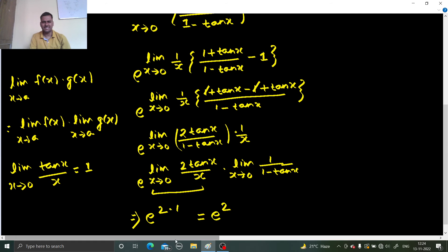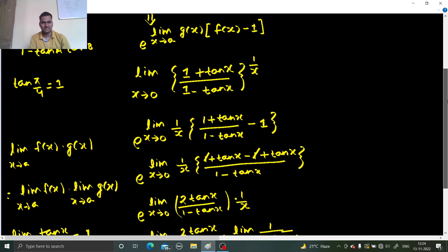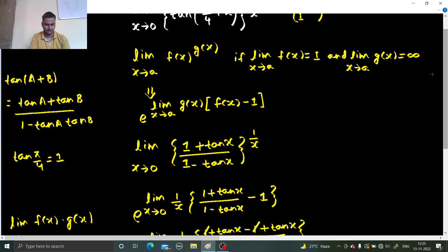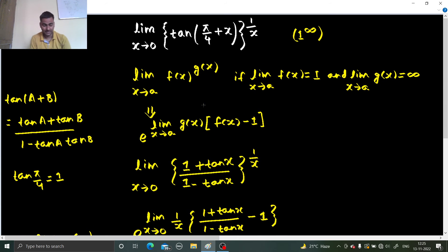It was easy, isn't it? Just some trigonometric calculations were there, otherwise you know that if 1 power infinity form is there, the power jumps down, as the power came down, 1/x was the power, so we took the power down.